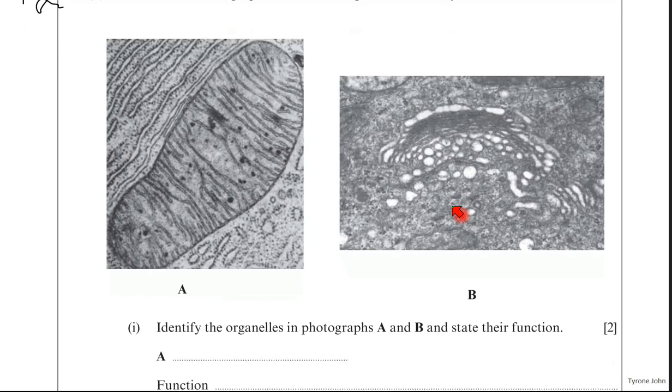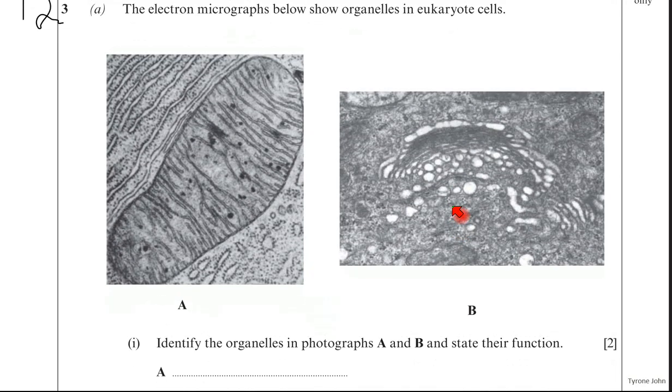Let's go through the feedback then. A and B, two organelles. A is a mitochondrion. B is the Golgi body. If we start with the Golgi body, the typical identifying features are this stack of sacs which are called cisternae, and also lots of these vesicles surrounding the Golgi. So they're two of the key features you need to know to be able to identify a Golgi body.